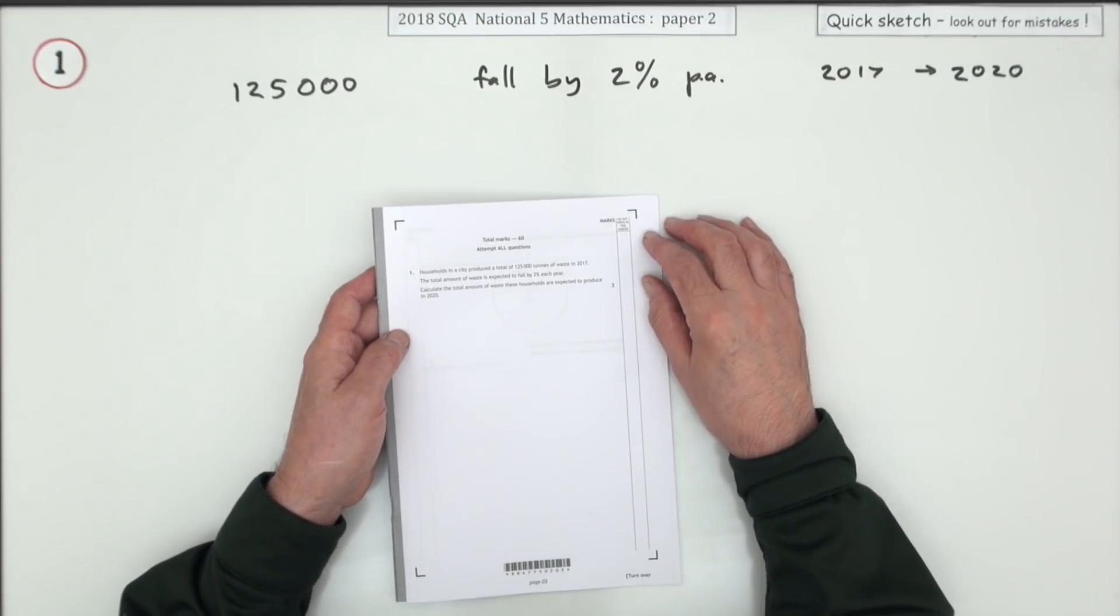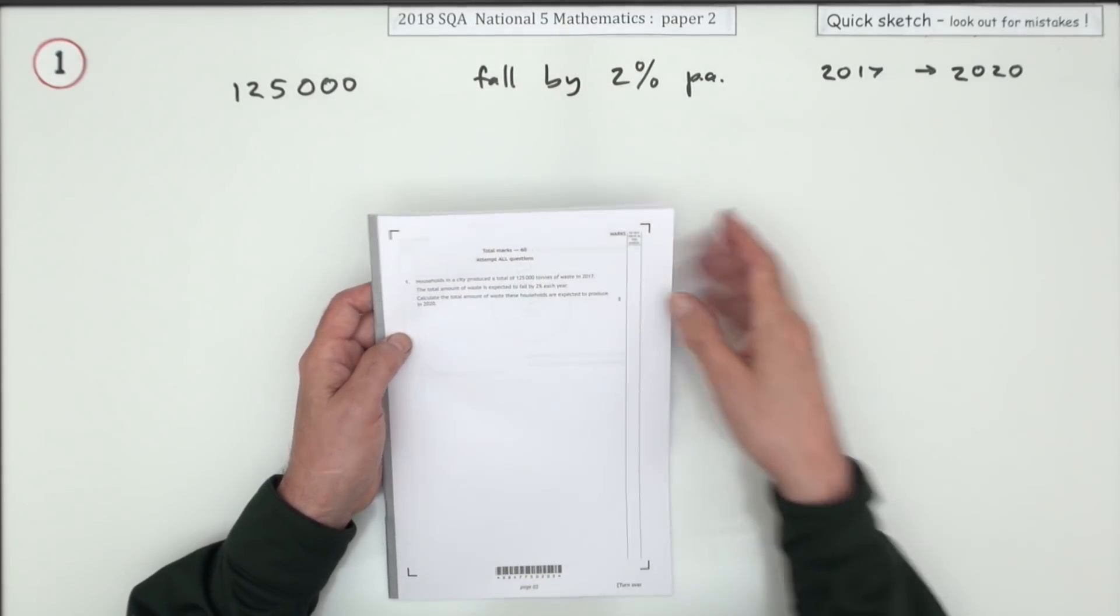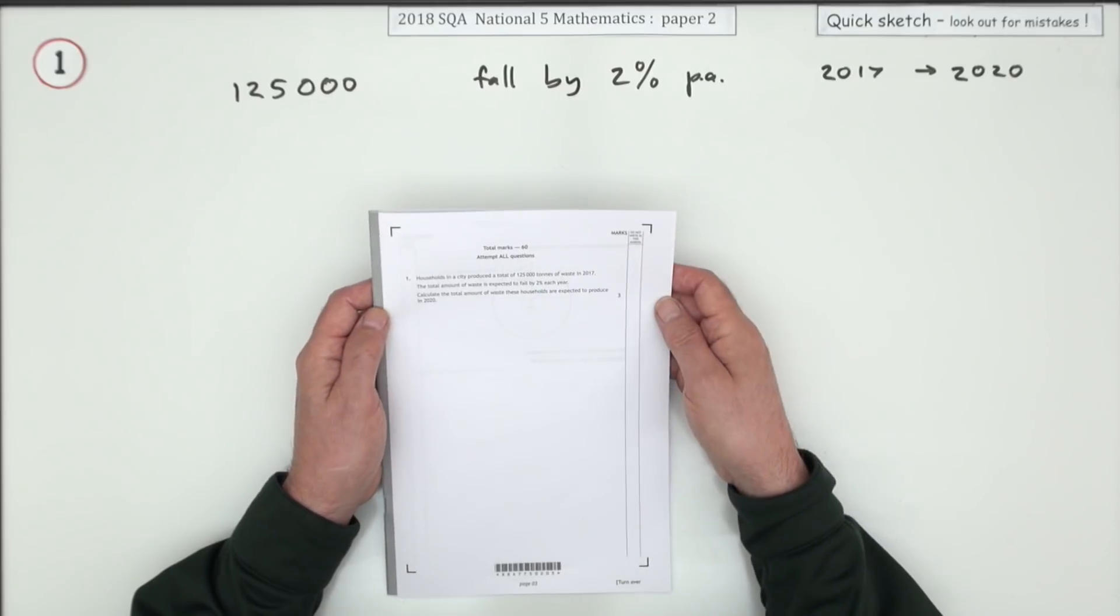Now nobody's going to do that the long way anymore by finding 2% and taking it off and then finding 2% in the new volume taken off etc. It's a quick three marks.